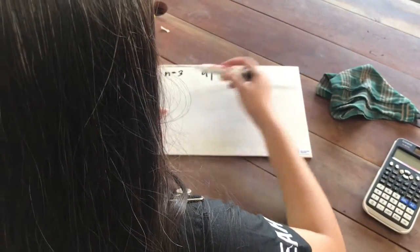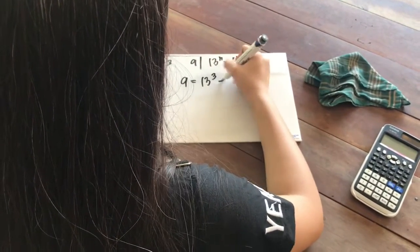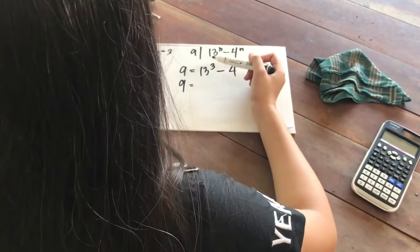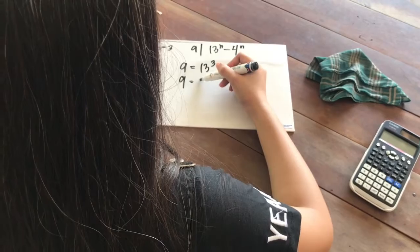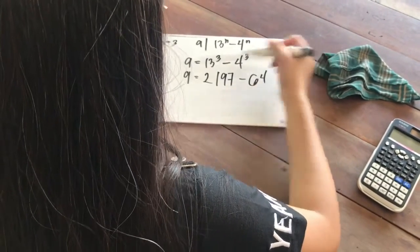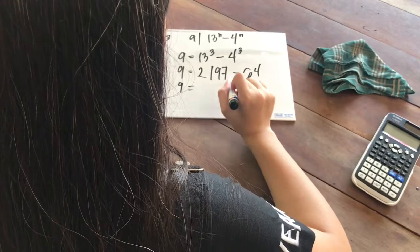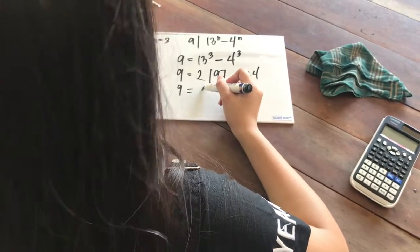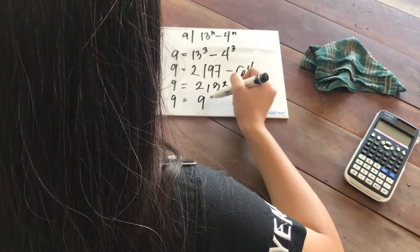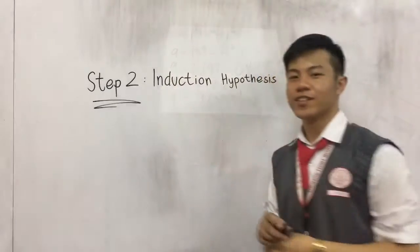We're going to substitute n equals 3 into the equation: 9 is equal to 13 raised to 3 minus 4 raised to 3. This result is also divisible by 9.